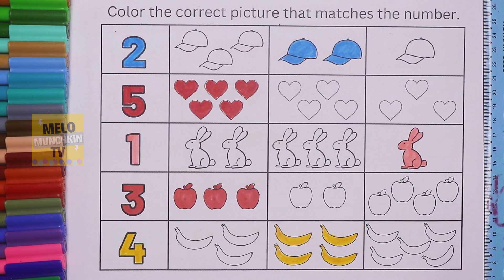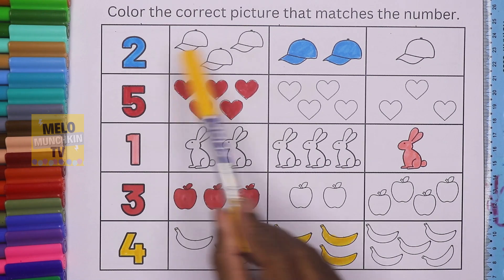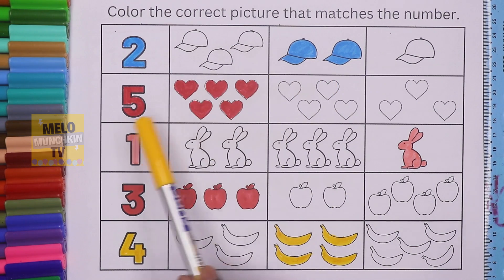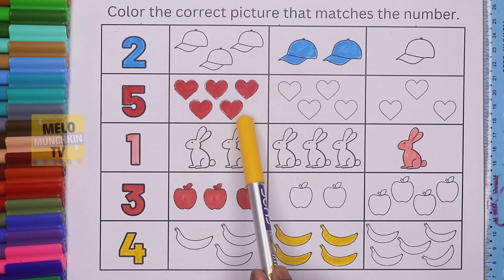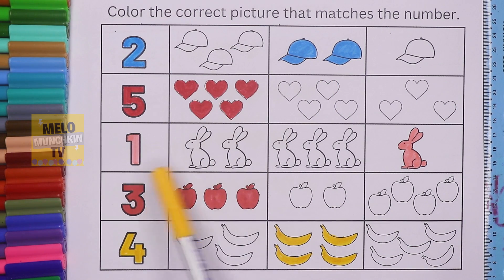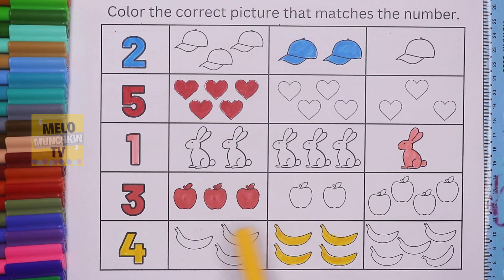We have completed our numbers and images: two — two caps, five — five hearts, one rabbit, three apples, four bananas. Okay kids, take care and bye bye!